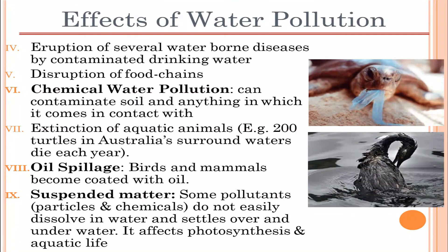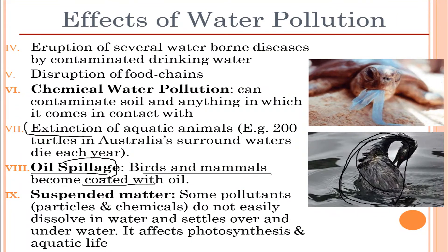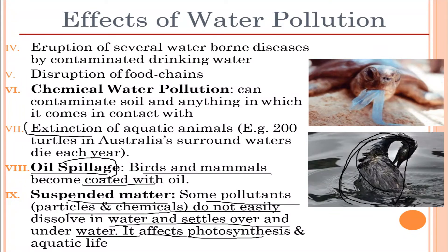Another effect is oil spillage — birds and mammals become coated with oil, as seen in the picture where the water appears entirely black. There is also suspended matter pollution: some pollutants and chemicals do not easily dissolve in water and settle on the underwater bed, affecting photosynthesis and aquatic life.